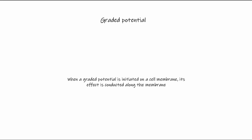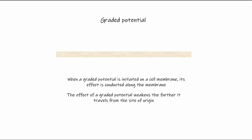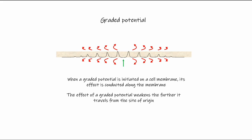When a graded potential is initiated on a cell membrane, effects occur at the point of stimulus but also conduct along the membrane as an electrical signal. The strength of the graded potential weakens the further we get from the site of origin — imagine a stimulus in the middle of a nerve, where the largest potential is closest to the stimulus and becomes weaker in each direction. This is because the electrical current leaks out of the neuron as it travels, a phenomenon called decremental conduction.